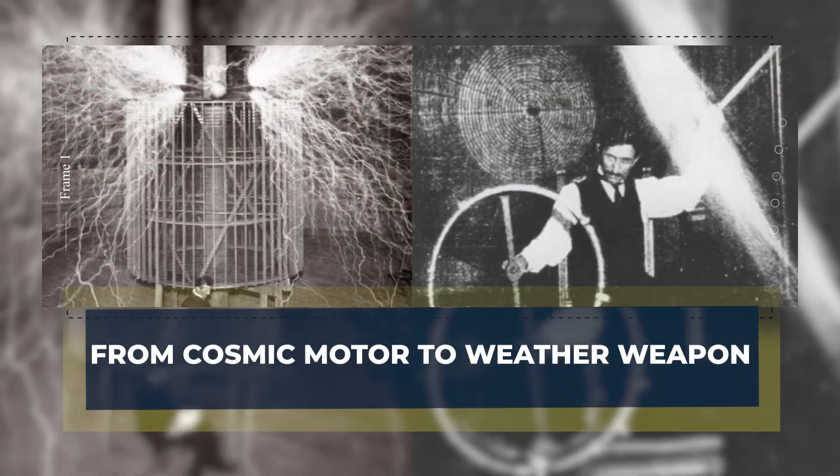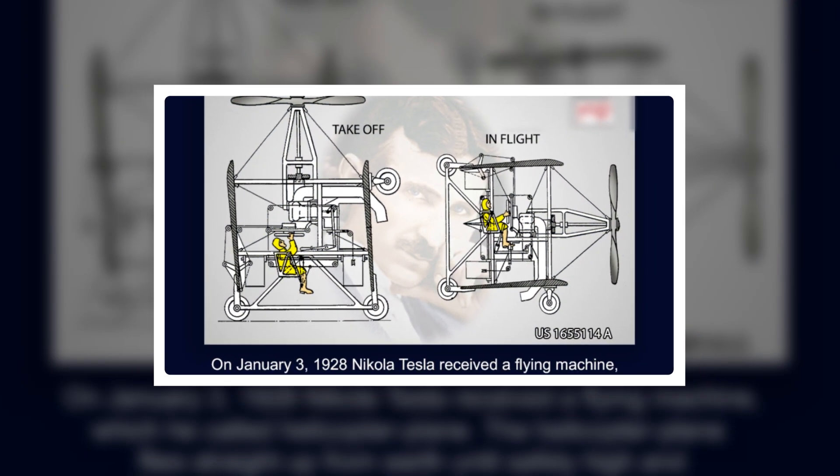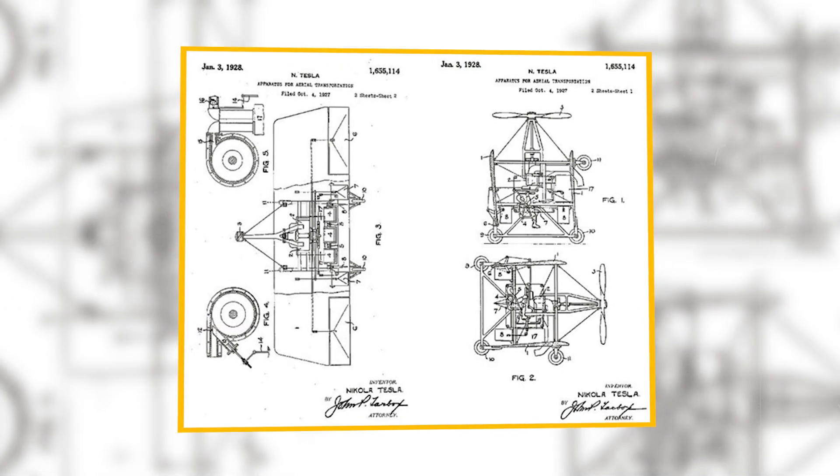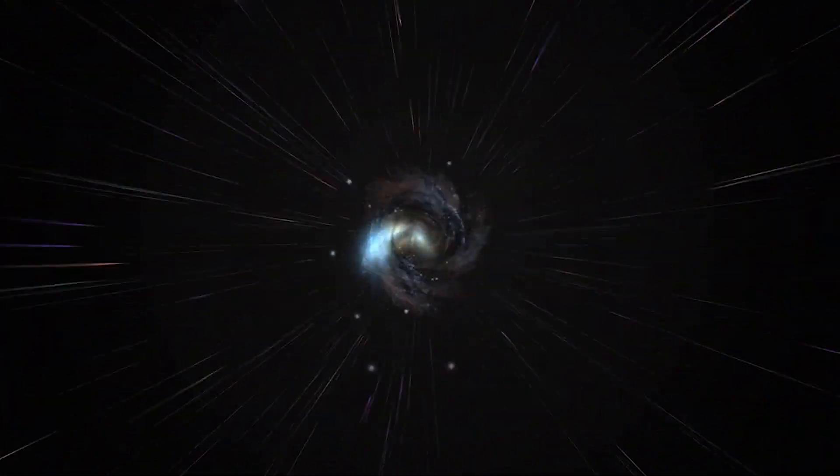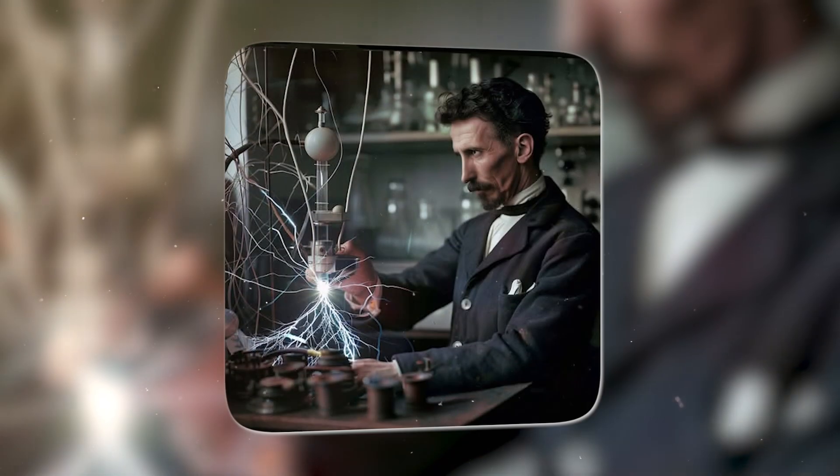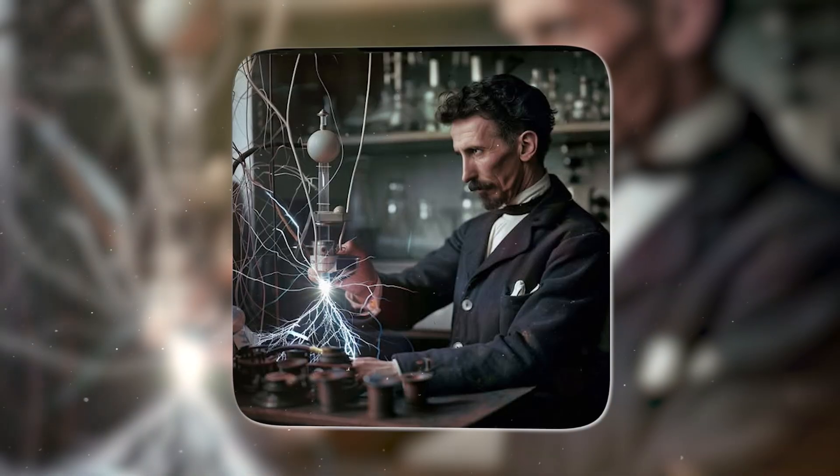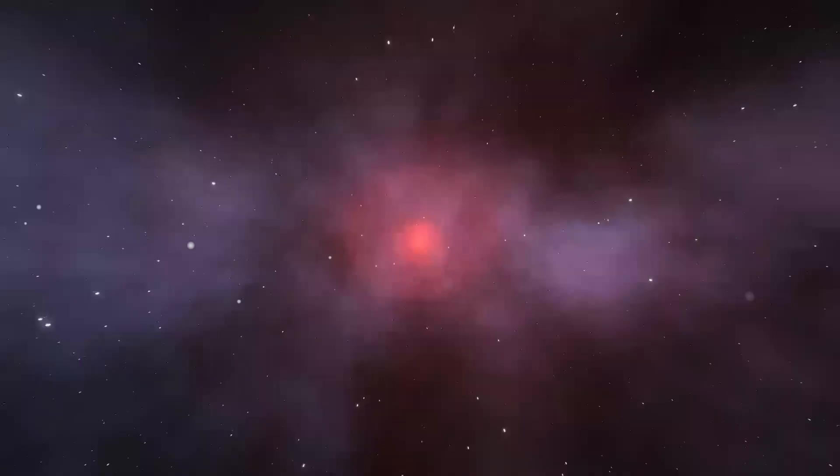From cosmic motor to weather weapon. On the page, Tesla's 1928 design looks almost disappointingly simple. A flat metal plate held high in the air. A wire running down into a condenser. A second wire leading from that storage tank into some device, a lamp, or a small motor. For nearly a century, most engineers agreed on what it was. Tesla, they said, was trying to catch cosmic rays, the high-energy particles that rain down from space and transform them into power. Creative idea. Terrible generator. In practice, the energy you could collect this way is tiny. Enough for a watch at best. Never enough for a house.